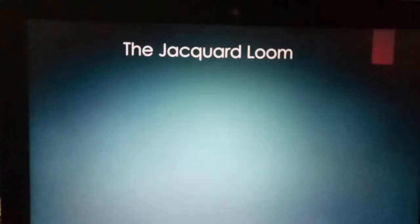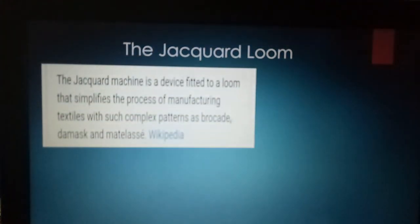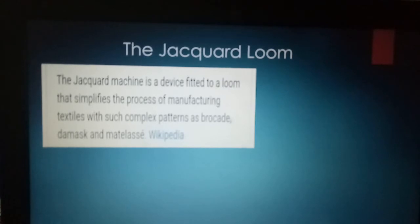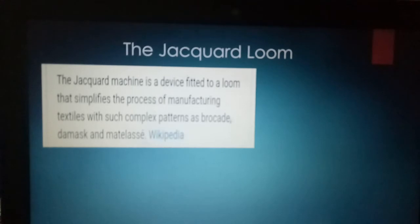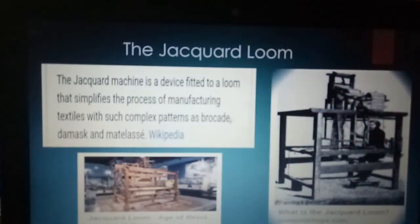The next device is the Jacquard Loom. The Jacquard Loom is a device attached to a loom that simplifies the process of manufacturing textiles, including complex patterns such as brocade. You can see the loom here — it was a big, huge loom where a person would sit and operate it.